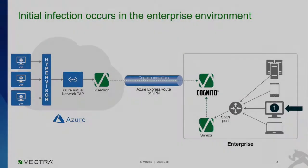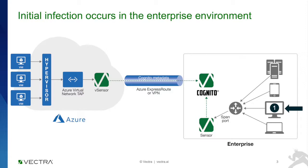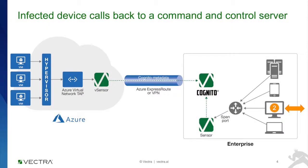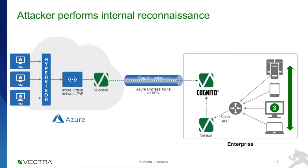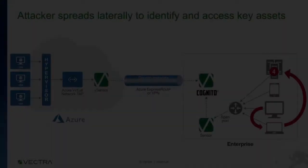We'll use this environment to walk through this use case. In most cases, the first initial incursion might be in the enterprise environment. After initial infection occurs on a user device, the first thing attackers always do is call back to get command and control for further instruction from the attacker domain. Once they receive further instructions, the attacker looks to perform internal reconnaissance on the network so they can see what other systems that infected system actually has access to.